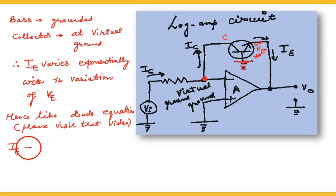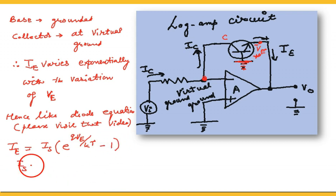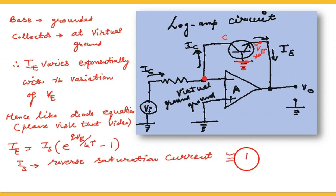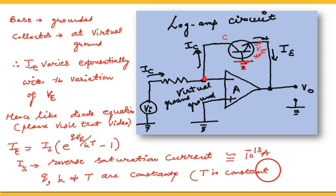Using the diode equation applied here: the emitter current IE is equal to the reverse saturation current IS multiplied by e raised to the power (q·VE / kT) minus 1. IS is the reverse saturation current, approximately 10 raised to some negative power — a very very small value. Q is the charge, K is Boltzmann's constant, and T is temperature. For a given temperature, q, k, and T are constants.